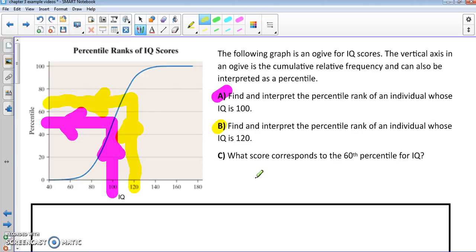And then C, we want to know what is the score that corresponds to the 60th percentile. So for that part, I'm going to start over here at 60 and then work my way back. So I'm going to go over on the graph and then come down.